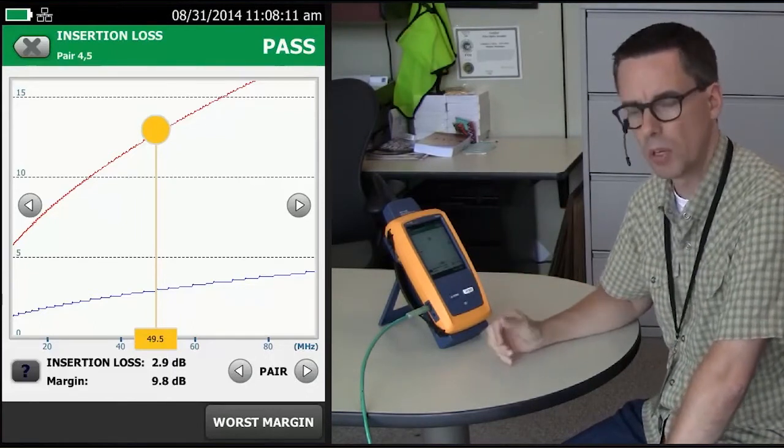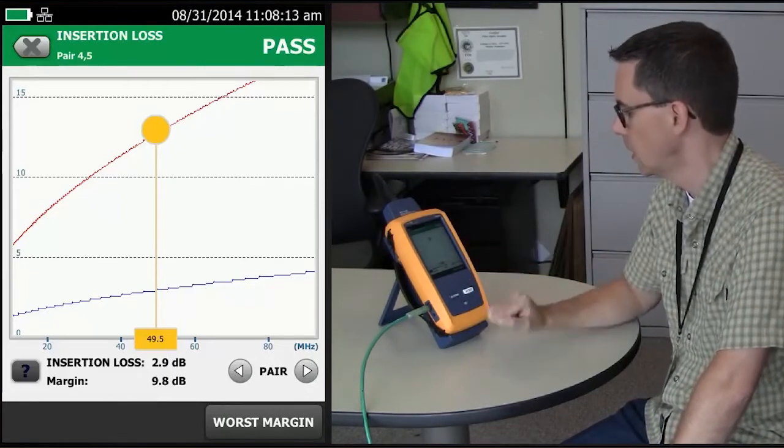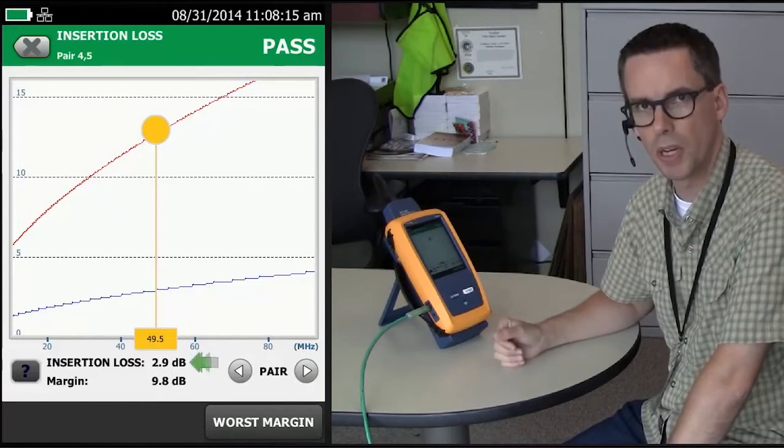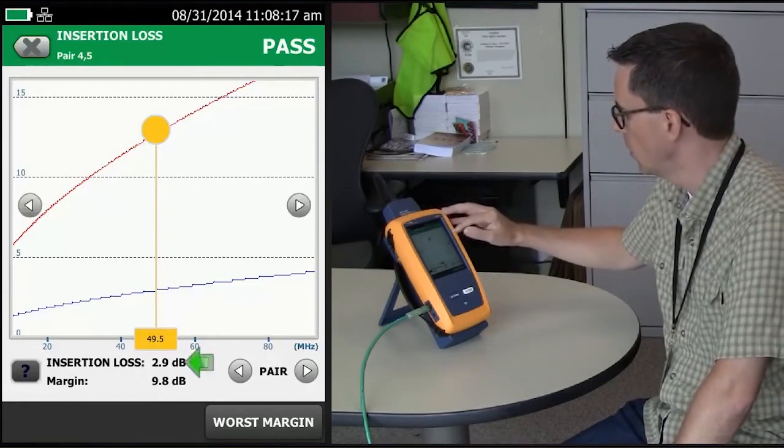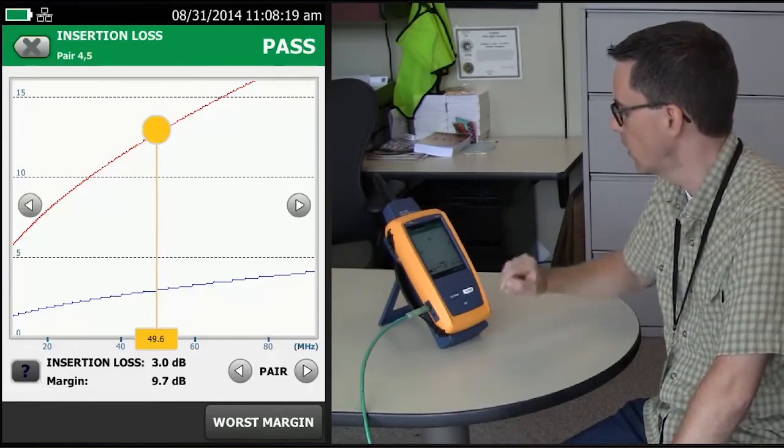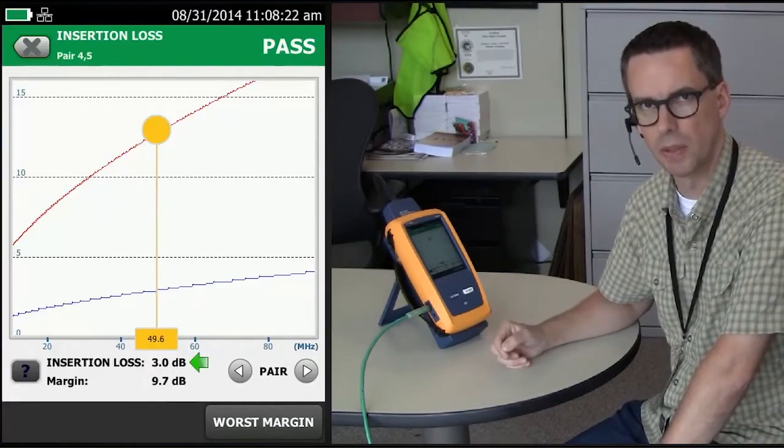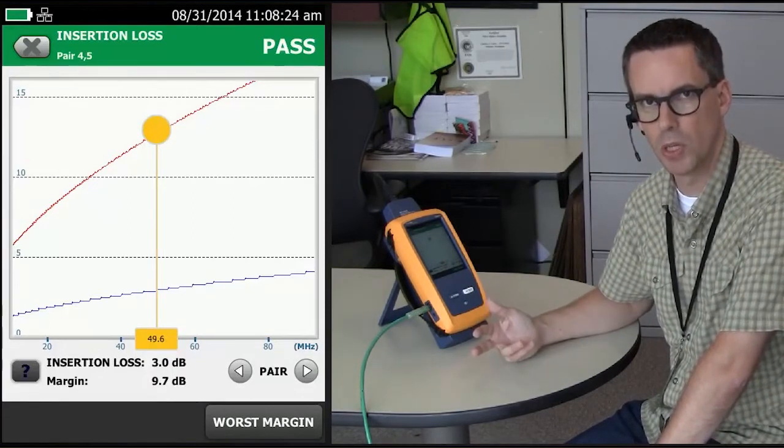You'll notice that at 49.5 MHz, here, our insertion loss is 2.9 dB. But when I go one step up, at 49.6, it turns into 3 dB, and that's how the 3 dB rule works.